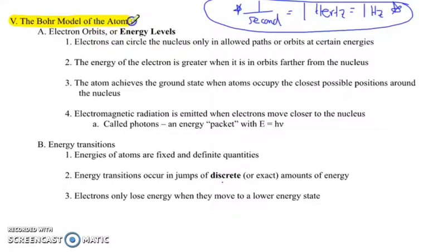So the Bohr model of the atom, he was the first guy that came up with electron orbits or energy levels. Remember that before Bohr, Rutherford said that there was a small, dense, positively charged nucleus, and the electrons were just kind of flying around somewhere, and he wasn't sure where they were or how exactly they were arranged. So here's what Bohr discovered.